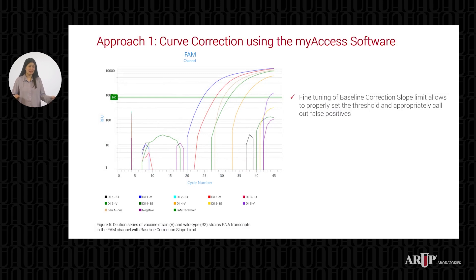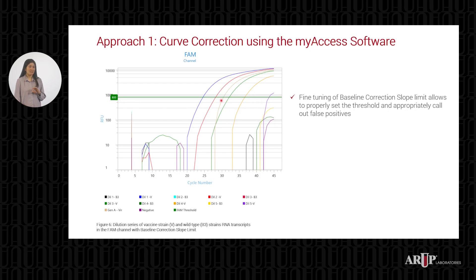This plot shows the same set of data analyzed with different analysis settings. The adjusted baseline correction slope limit was integrated into the protocol and the data was re-analyzed. As you can see, by fine-tuning the analysis parameters, we were able to significantly reduce those flatter-looking curves around the baseline and we were only able to detect vaccine strain on the FAM channel. Although adjusting the analysis settings worked very well and significantly reduced the false positive curve, we wanted to further optimize the assay.